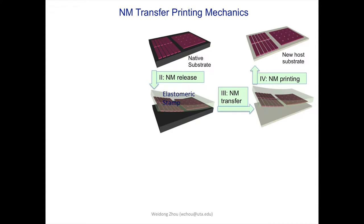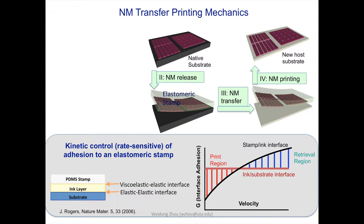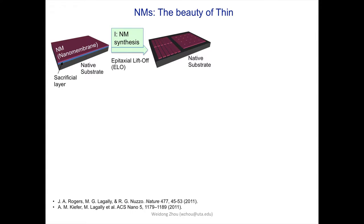Two aspects to highlight. First, the mechanics: John Rogers published this principle in 2006. It involves three interfaces — the PDMS stamp, the device layer (e.g., silicon or other materials), and the substrate. The viscoelastic-elastic interface has a rate-dependent adhesive force (G-factor), while the elastic-elastic interface has a constant value. By controlling speed — peeling quickly to pick up, printing slowly to release — you can controllably transfer the membrane. Second, the nanomembrane itself: these crystalline thin films have drastically different mechanical properties from bulk, including extremely low flexural rigidity and very low energy release rate.